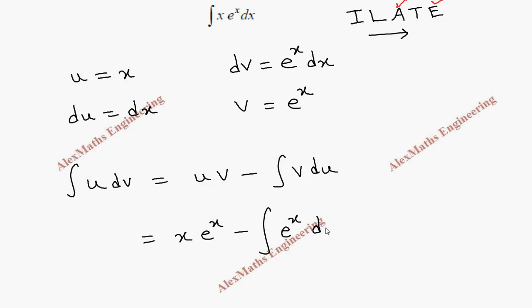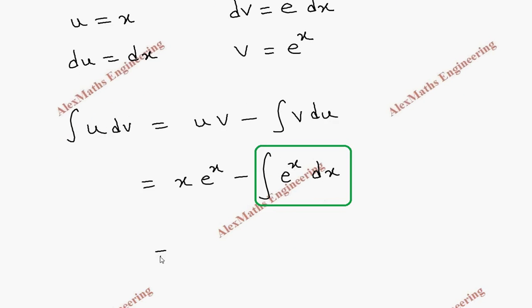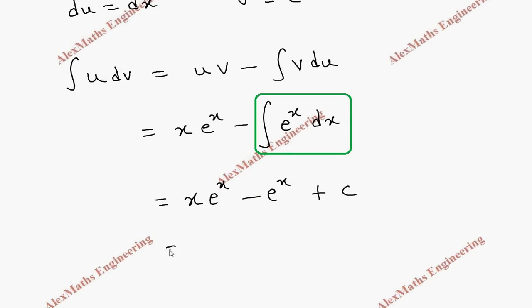Now this integration we have to complete. Integral e^x dx is e^x. So the answer is first term as it is, second term is minus e^x, and at the end we put a constant c. We can also take e^x common for the first two terms, so e^x(x-1) plus c.